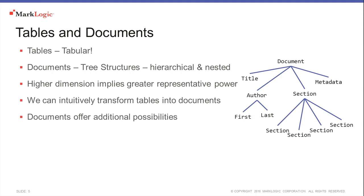To understand that question we need to understand both sides of the equation — tables on one hand, documents on the other. I won't dwell on tables because everyone is familiar with them; think of them like spreadsheets. Documents need a little more explanation. Documents are tree structures — sometimes referred to as acyclic graphs. Their key characteristics are that they're hierarchical and nested. They have a higher dimension than tables, which are very obviously two-dimensional, and because of that higher dimension they have greater expressive power.